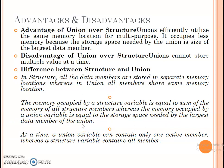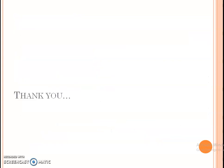The union allocates memory equal to its largest data member. At a time, a union variable can contain only one active member, whereas a structure variable contains all members simultaneously. In a structure, all variable values are stored, but in a union, only the last assigned variable data is retained. These are some of the key advantages and disadvantages of union. Thank you.